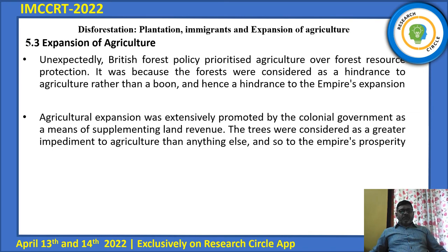The unexpected British forest policy prioritized agriculture over forest resource protection. It was because forests were considered a hindrance to agriculture rather than a boon, and hence a hindrance to expansion.